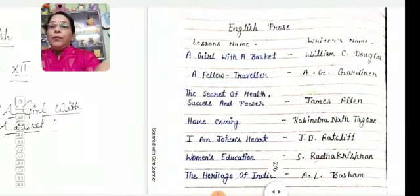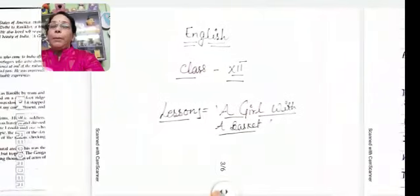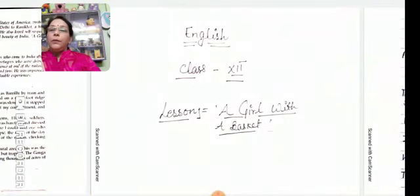Our first lesson is 'A Girl with a Basket.' It has been written by William C. Douglas. William C. Douglas was not a writer — he was a judge in the Supreme Court of the United States of America. He visited India in 1950.